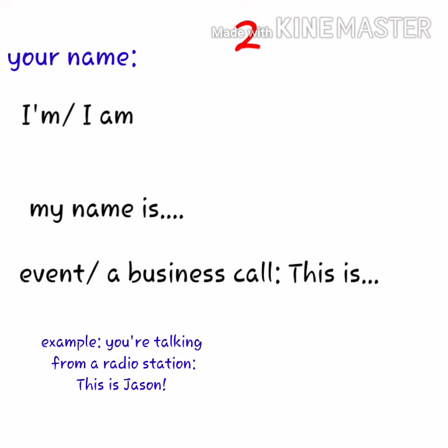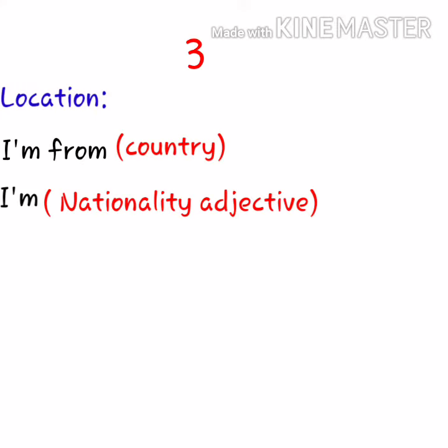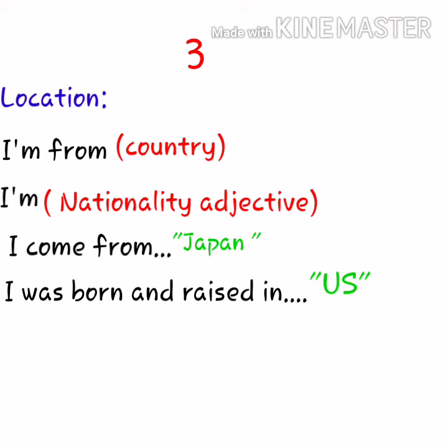Now we're moving to the third basic, which is location. To tell someone where you are from, you can say 'I'm from' and mention your country, or use your nationality adjective. The next one is 'I come from' and mention your country — this is useful when your origins or location are far from where you are now. If you want to give more information, like where you were born, you can say 'I was born and raised in the US,' for example.